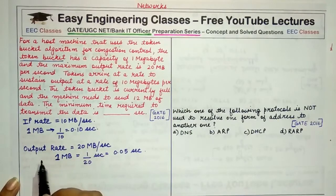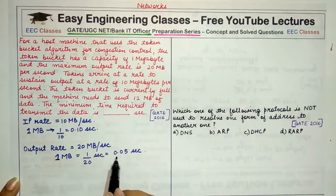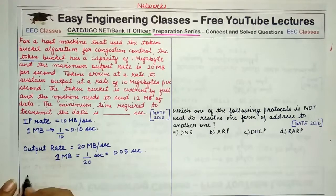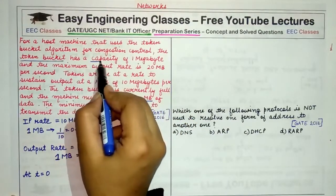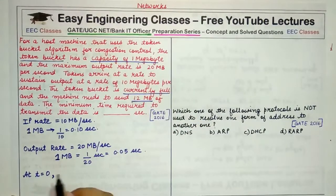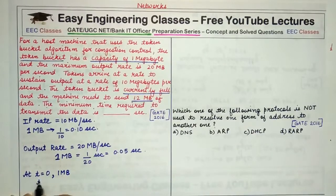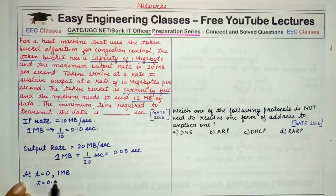The token bucket is being filled at a rate corresponding to 0.10 seconds per MB and being emptied at 0.05 seconds per MB. If we have to send 12 MB of data and start at time equal to 0, since the bucket is initially full — the capacity is 1 MB and it is currently full — at time 0 we have 1 MB of tokens. So we can send 1 MB out. At time equal to 0.05 seconds, how much data can be moved out?